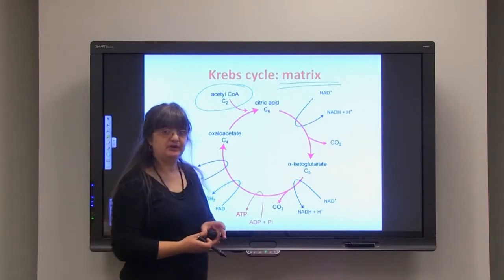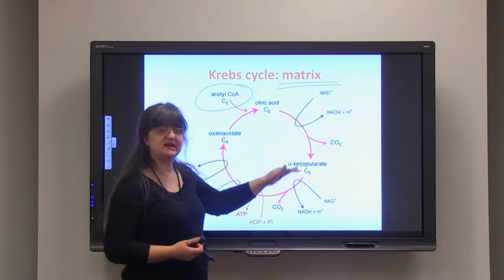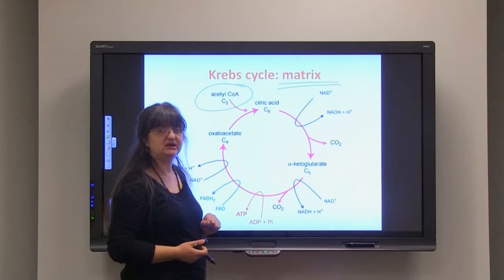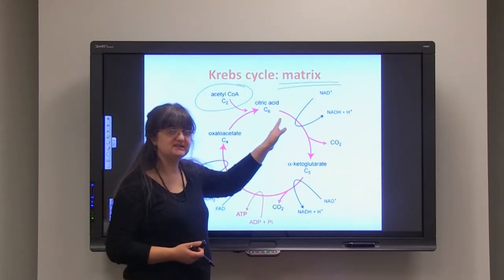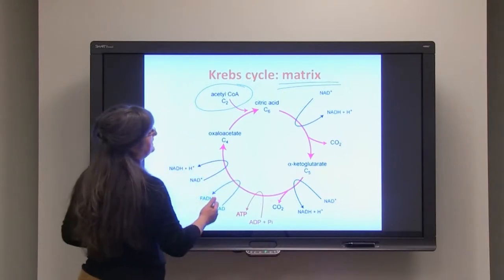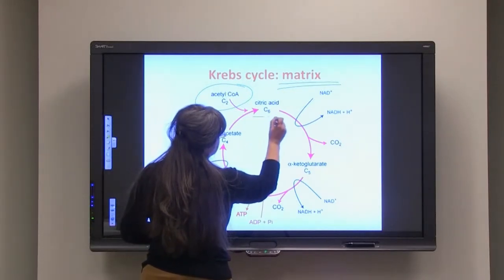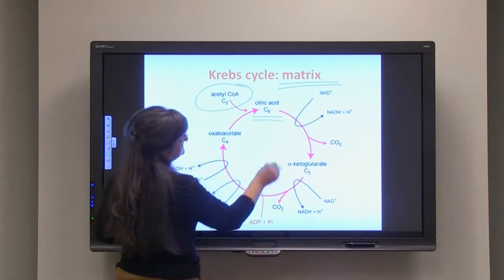I need you to remember that for each of the steps shown here, each step is controlled by a separate enzyme. So citric acid is the first one in this cycle.